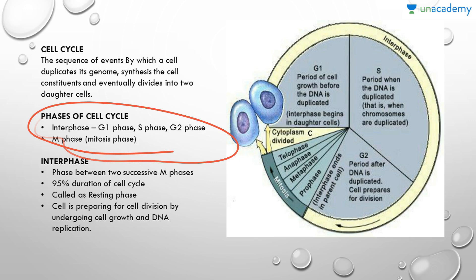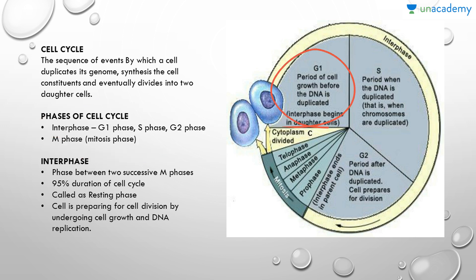Interphase occurs between two successive M phases, and its duration is about 95% of the total cell cycle. It is also called the resting phase because the cell is preparing for division by undergoing cell growth and DNA replication. In G1 phase, cell growth continues and the cell is metabolically active.